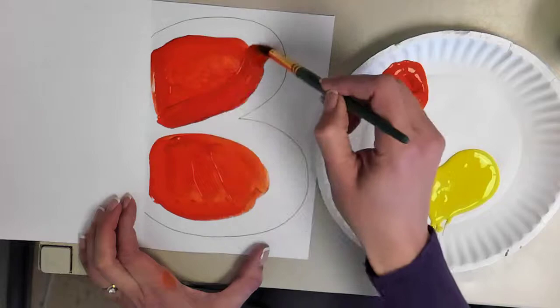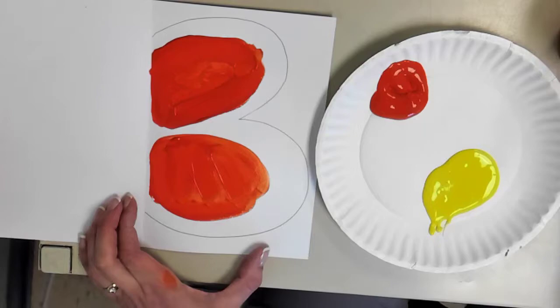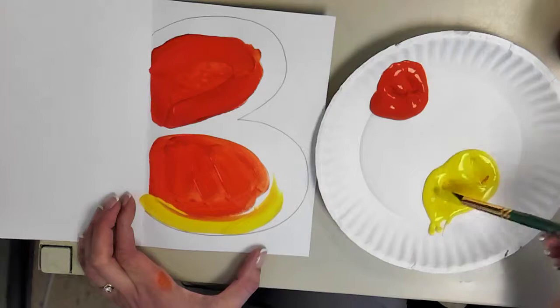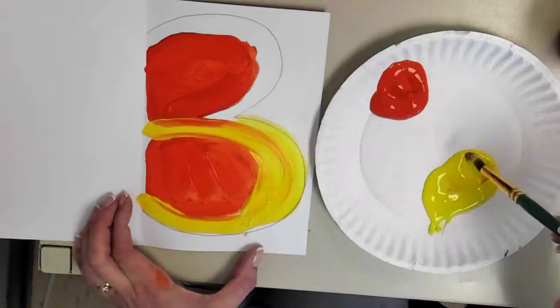When you're going to switch colors to your yellow, you're going to want to rinse it really well and then finish painting that in. If you want it to mix as you go that's fine. It most likely will mix quite a bit when you press it to the other side.